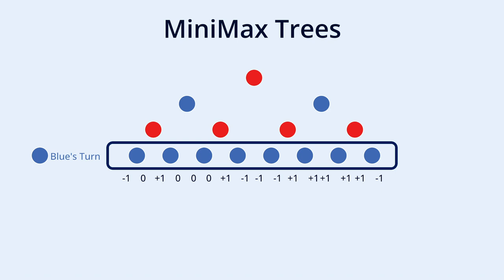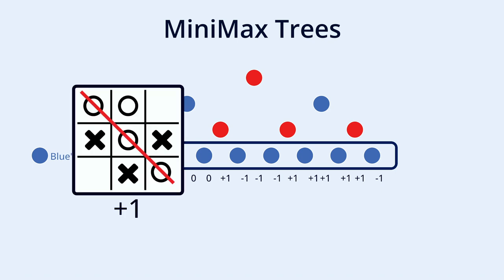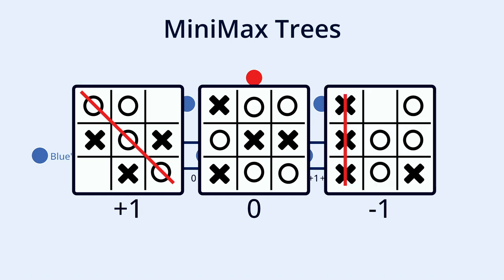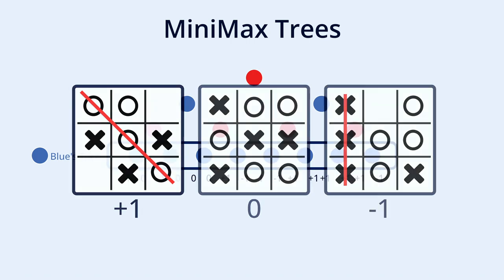Next, we need to determine the score of these final nodes, or leaves. We determine the score by looking at the state of the game and giving it a score. The higher the score, the better. For Tic-Tac-Toe that will be plus 1 for a win, 0 for a tie, and minus 1 for a loss.